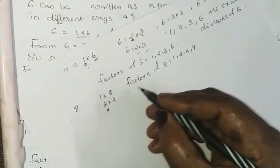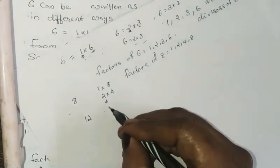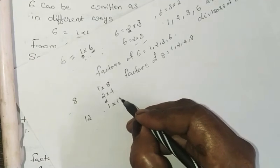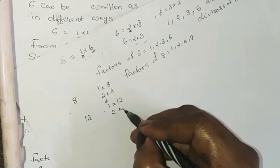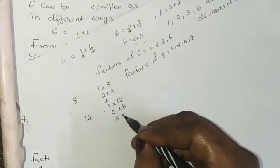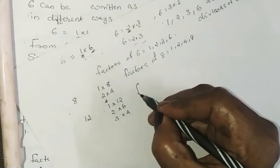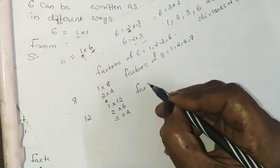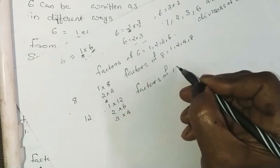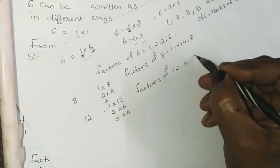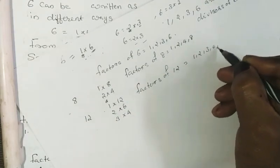Next example, 12. 12 is written as 1 into 12, 2 into 6, 3 into 4. Now the factors of 12 are equal to 1, 2, 3, 4, 6.